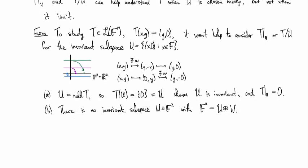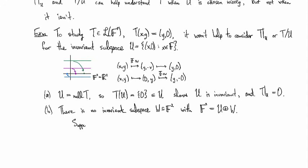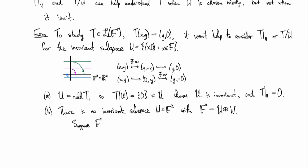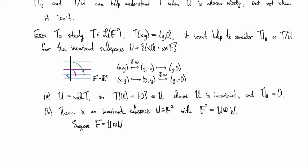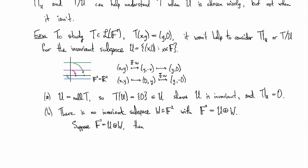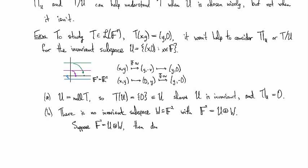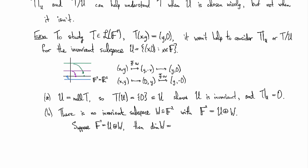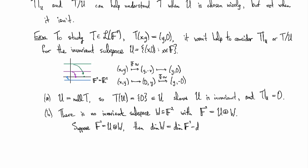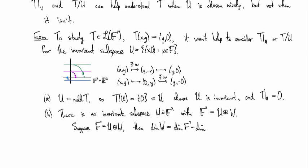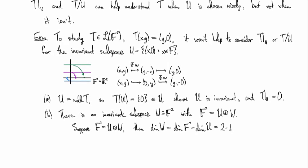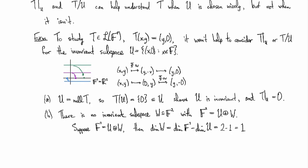So to see why this is true, suppose we could write F² as a direct sum like this. Then as we saw in the previous example, the dimension of W would be the dimension of F² minus the dimension of U, which would be 1.